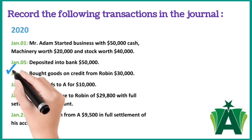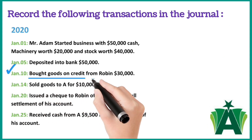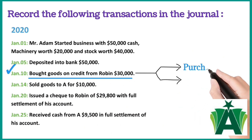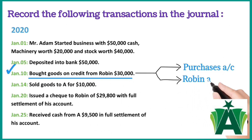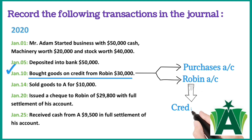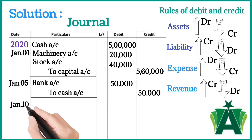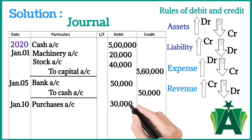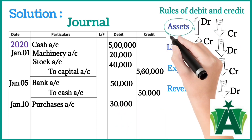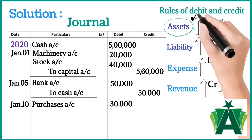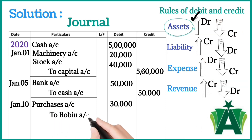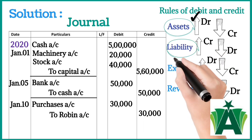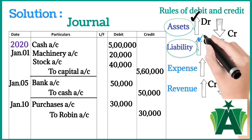January 10: Bought goods on credit from Robin for $30,000. Here two accounts are involved: purchases account and Robin account — Robin is a creditor. Purchases account debit with $30,000 — reason: purchases account nature is an asset and increases in business. Robin account credit with the same amount — reason: Robin account nature is a liability and increases in business.